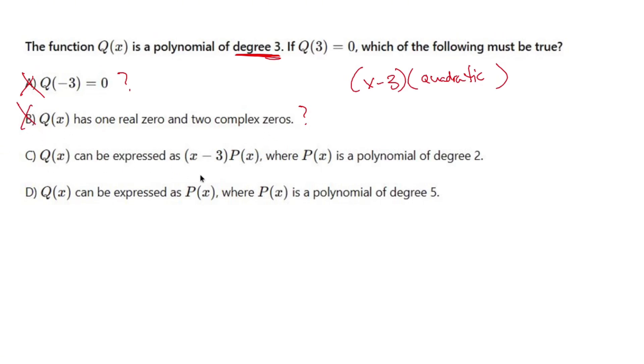Q(x) can be expressed as x minus three times P(x), where P(x) is a polynomial of degree two. So C seems to be good.